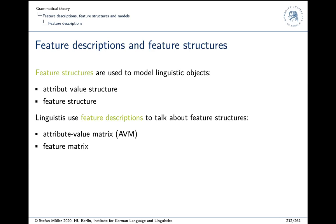A model is like a physical model — a model of a little ship or a landscape, usually smaller so you can see something. We do the same for linguistic utterances: we don't model every detail but certain aspects, and for this model we want to have descriptions. That's what you get when you look at theories like HPSG, for instance. You have bracket expressions — those are feature descriptions — and they describe the properties of the model.